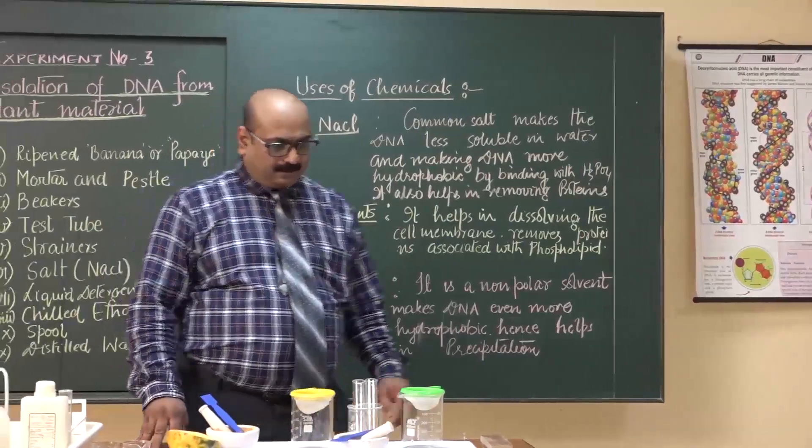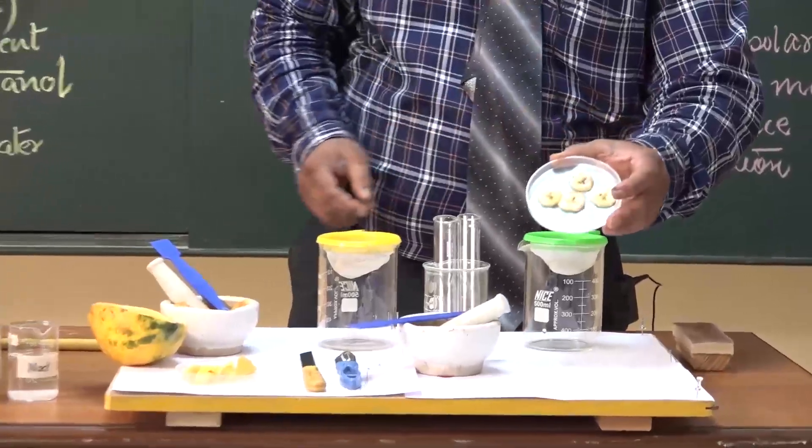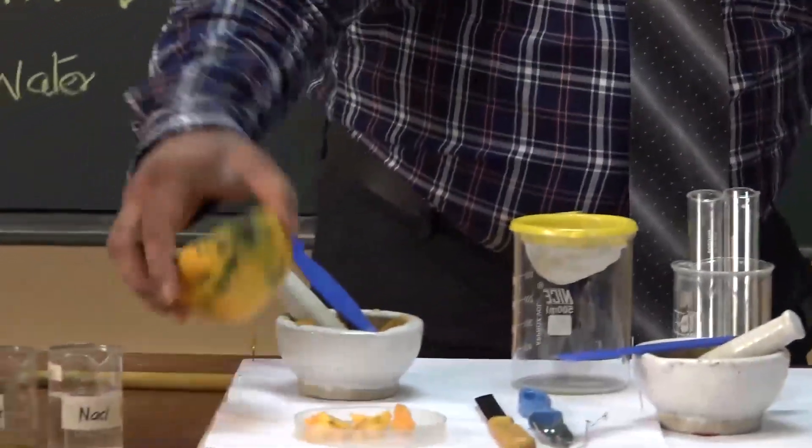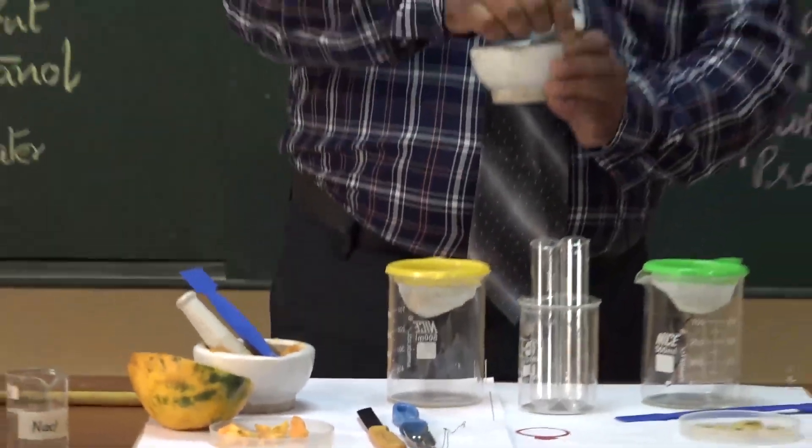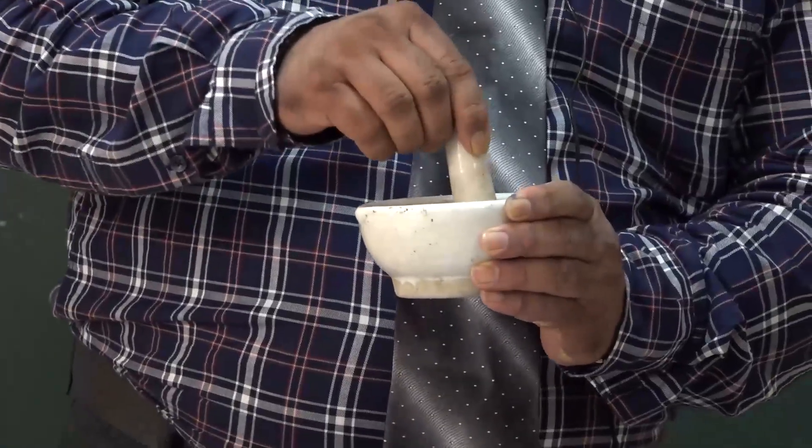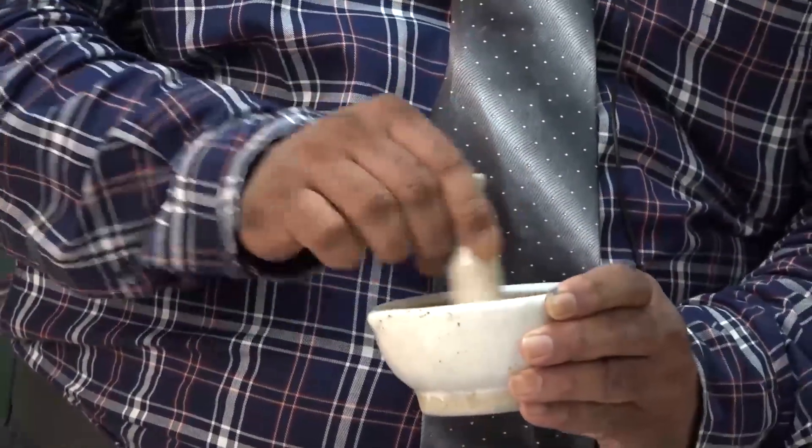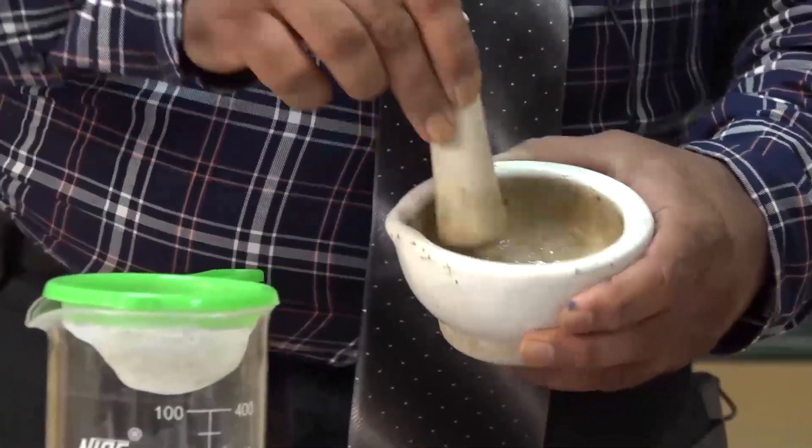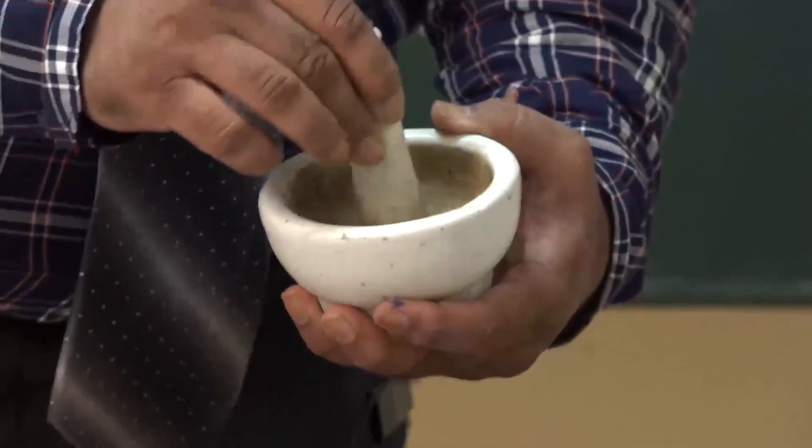Now students, let us start the practical. Here, I have cut the banana, I have cut ripened papaya also. By peeler you can peel off ripened banana. By mortar and pestle you can make a fine paste of banana. The paste has been prepared, banana was ripened and fine.